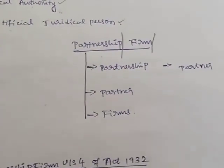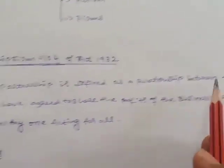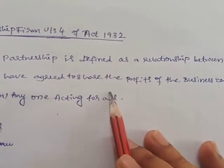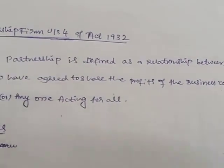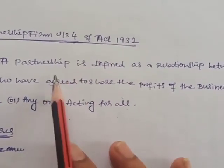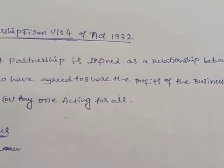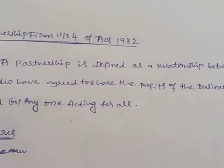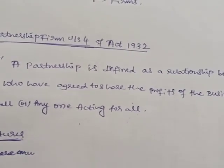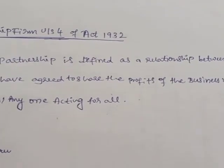The definition under Section 4 of the Partnership Act, 1932 states: partnership is a relationship between persons who have agreed to share the profits of the business carried by all or any one of them acting for all. That means when two or more persons come together to start a business and share the profits according to their contribution, that is called partnership. They agree to share profits according to the partnership deed or partnership agreement — through a contract they come together to start a firm, and if they earn profit, they share it according to their agreed proportion.